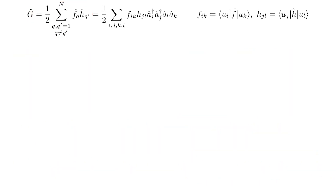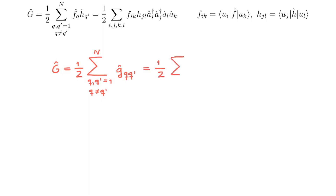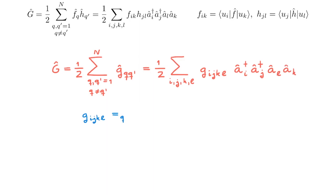So we can finally write the two-body operator G in second quantization. It is a symmetric operator equal to one-half sum over i, j, k, l of G_{ijkl} times a_i^† a_j^† a_l a_k, where G_{ijkl} is the matrix element of the two-particle operator in the corresponding two-particle tensor product space.